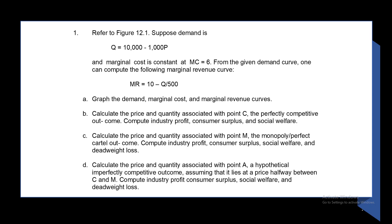It's good to remember that if a marginal cost is a constant marginal cost, therefore the marginal cost will equal your average cost. For a given demand curve, one can compute the following marginal revenue function, which equals 10 minus Q over 500.